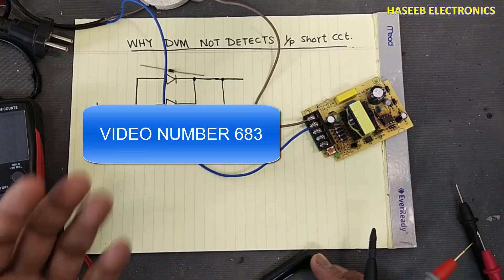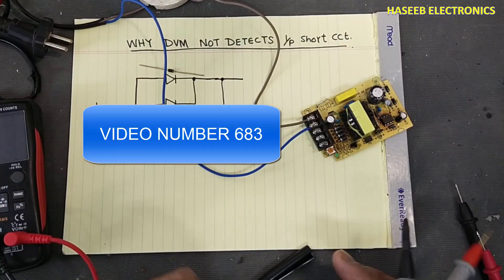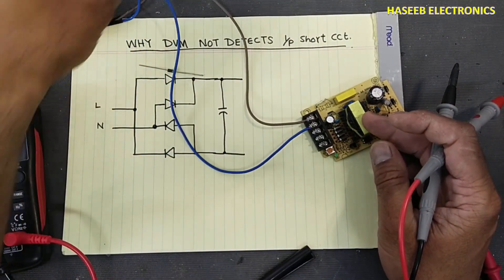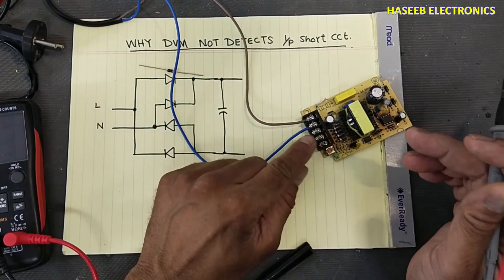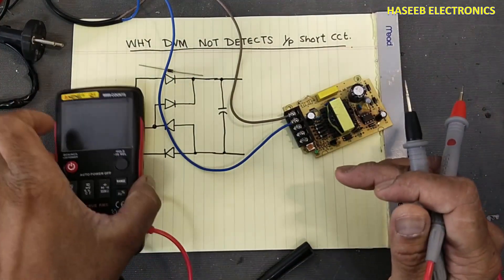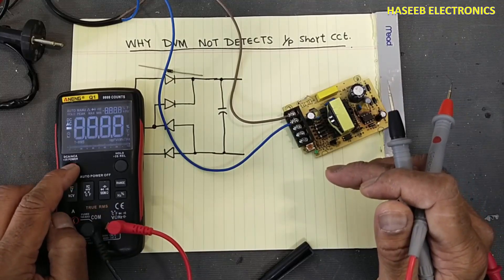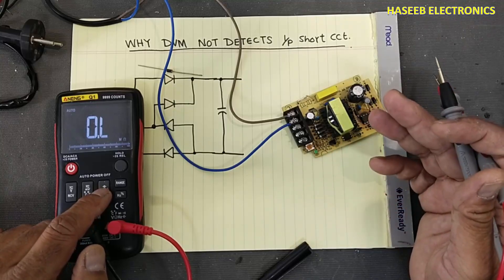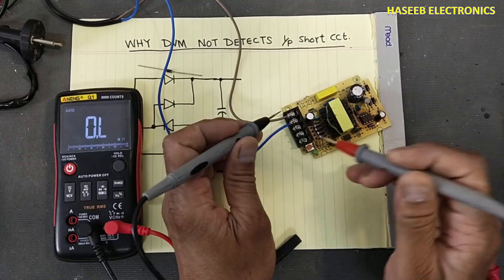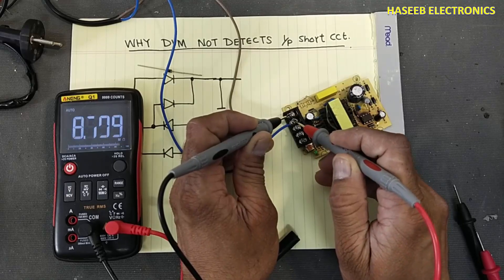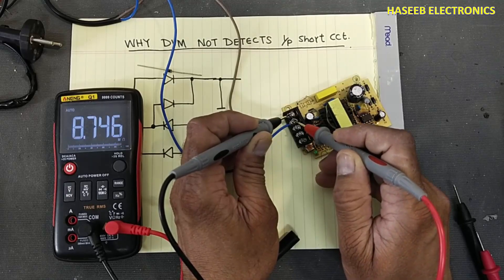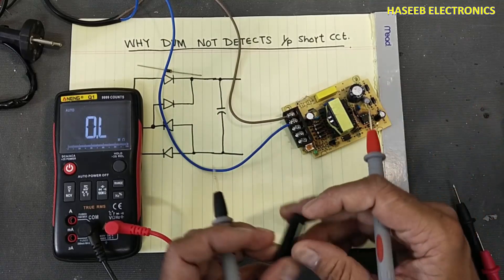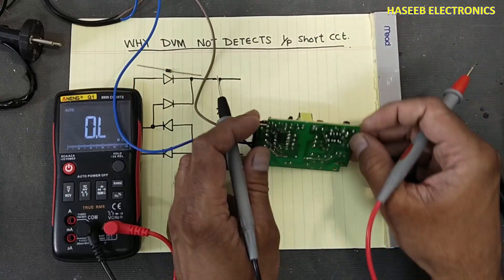Welcome back to the channel. In my last video, discussing the usage of series length and workbench safeties, I demonstrated that we can check the input impedance for any circuit, either it is short circuit or not. I demonstrated that we can check the input resistance — it is showing 8.7 mega ohms — but this circuit has a short circuit.